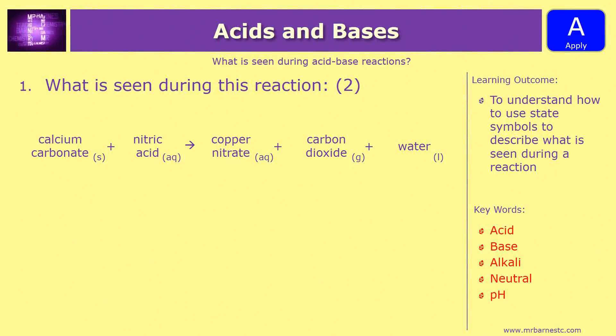Okay let's have a look at an exam question then. So nice and simply what is seen during this reaction? So you have calcium carbonate reacting with nitric acid to make copper nitrate, carbon dioxide and water. Have a look at the state symbols, look at the difference between the left and the right and tell me what you would see.